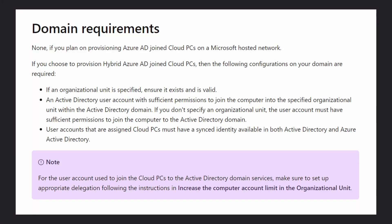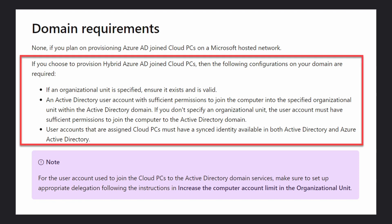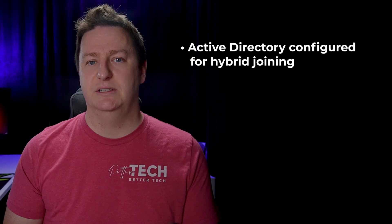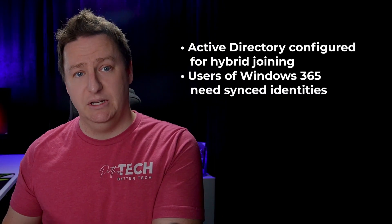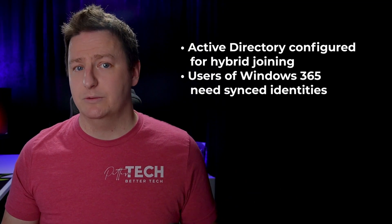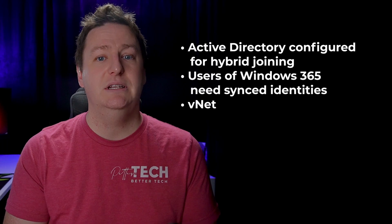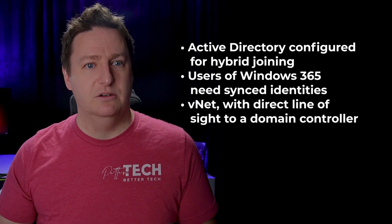Windows 365 Enterprise also supports hybrid joining your cloud PCs, meaning they will be joined to a traditional Active Directory as well as Azure AD. Azure AD Domain Services is not supported, simply because it doesn't support hybrid joining. Opting for hybrid join does bring up a few more prerequisites, all related to Active Directory. You need your Active Directory configured for hybrid joining, and the users that will be using Windows 365 need a synced identity available in both Azure AD and Active Directory — they cannot be cloud-only. With hybrid joined cloud PCs you also need to bring your own VNet, and from that VNet the cloud PCs will need a direct line of sight to a domain controller, otherwise domain joining will fail.